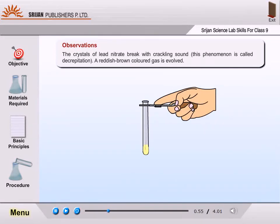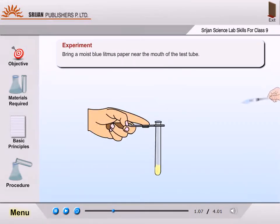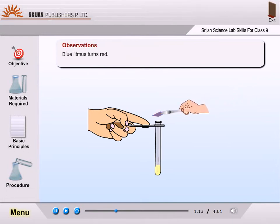The reddish brown colored gas is evolved. The evolved gas contains nitrogen dioxide gas. Bring a moist blue litmus paper near the mouth of the test tube. Blue litmus turns red.